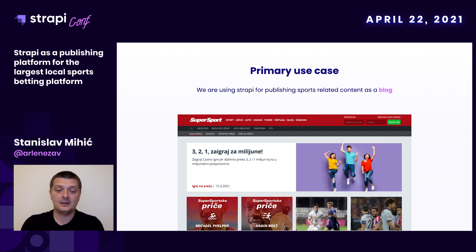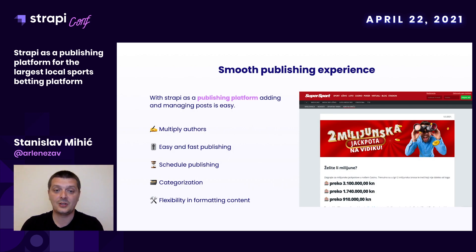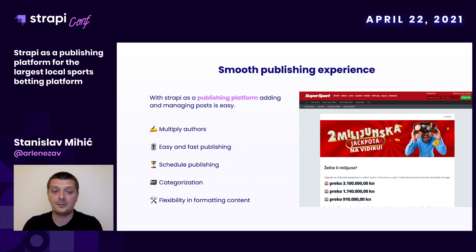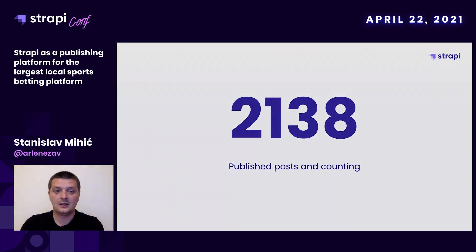Our primary use case is using Strapi for publishing sports-related content as a blog. Today we have blog posts that are fully managed through the Strapi admin interface. We have multiple authors, and publishing is easy and very fast for them. We're also using scheduled publishing, post categorization, and we have great flexibility in formatting content — embedded videos, score data, upcoming news regarding sport events, and similar. Today we have over 2,100 published posts and counting, with four to five new blog posts on a daily basis.